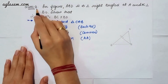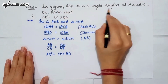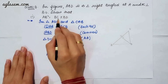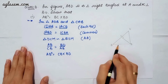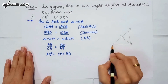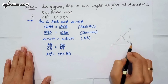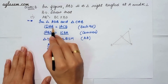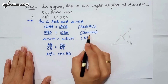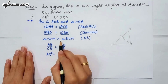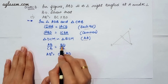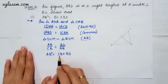Moving to question number 3: in the figure, ABD is a triangle right angled at A, and AC is perpendicular to BD. We have to show that AB² = BC × BD. In triangles ABD and CAB, angle DAB = angle ACB = 90°, and angle ABD = angle CBA (common). By AA similarity, triangle ABD is similar to triangle CAB. So AB/CB = BD/AB, therefore AB² = CB × BD.